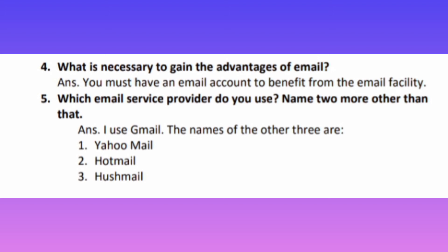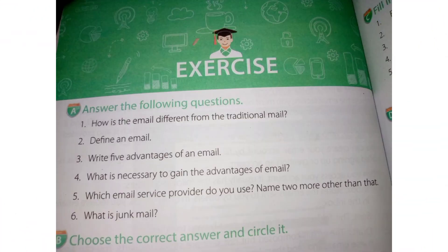Question number five: Which email service provider do you use? Name two more other than that. Answer: I use Gmail. The names of three other email service providers are: number one, Yahoo Mail; number two, Hotmail; number three, Zoho Mail. If you use Yahoo Mail or Hotmail, then write 'I use Yahoo Mail' or 'I use Hotmail' accordingly.